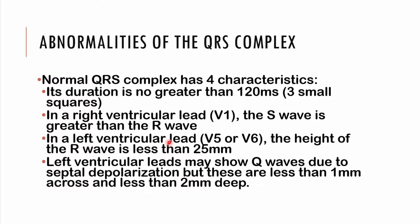Moving on to abnormalities affecting the QRS complex. The normal QRS complex has four characteristics: it is not greater than three small squares, meaning not greater than 120 milliseconds in duration. In V1, representing the right ventricle, the S wave is greater than the R wave. In the left ventricular leads V5 and V6, the R wave height should be less than 25 millimeters. There may be septal Q waves in left ventricular leads, but these should be less than one millimeter across and less than two millimeters deep — if greater, they are pathological.